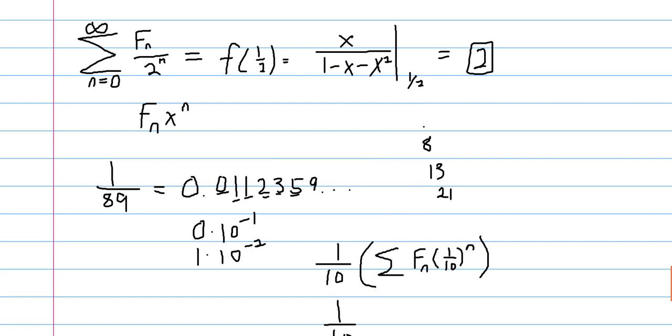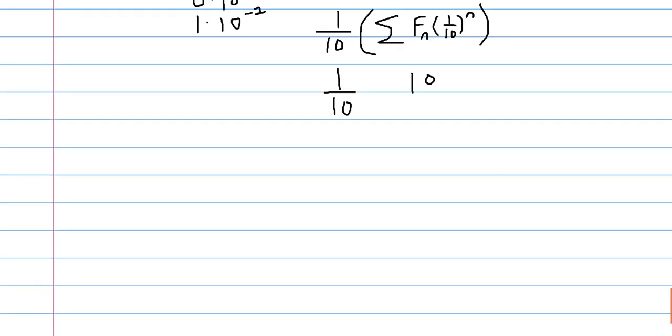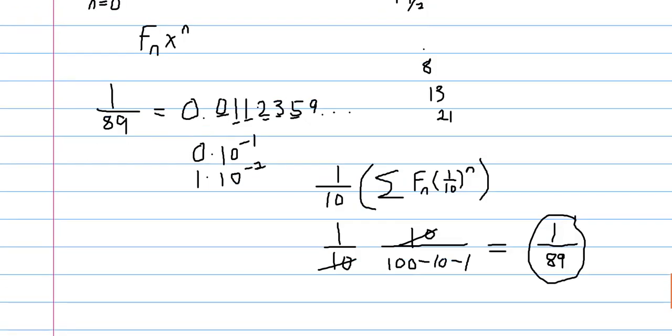That'll make this one tenth, which is our x, go to a ten. So we'll have ten in the numerator, and then we'll have one hundred minus ten minus one. So we see here that the tens cancel out, and then a hundred minus ten minus one is actually eighty-nine. So we know for certain that one over eighty-nine does have this connection with the Fibonacci numbers.